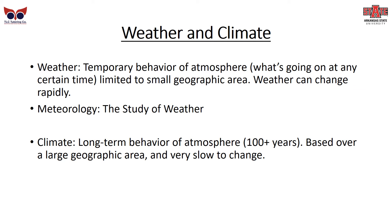As we get into weather and climate, we want to make a differentiation between the two. Weather is the temporary behavior of the atmosphere — what's going on at a certain time, limited to a small geographic area, and weather can change rapidly. Meteorology is the study of weather. Climate, on the other hand, is the long-term behavior of the atmosphere — 100-plus years — based over a large geographic area and very slow to change.